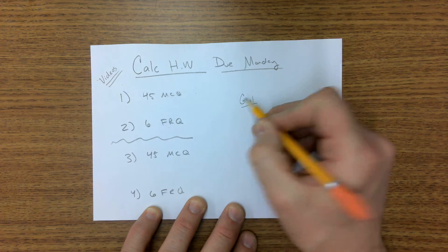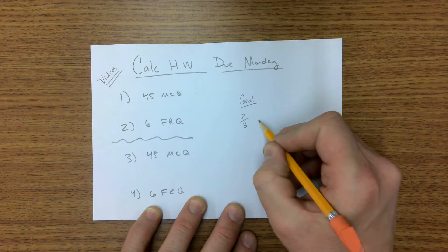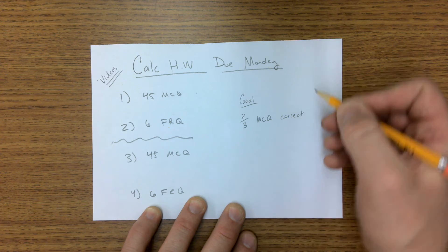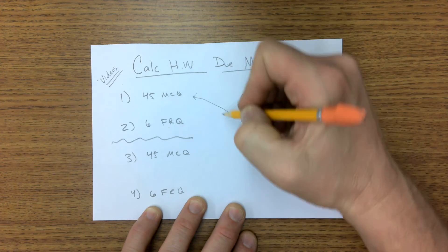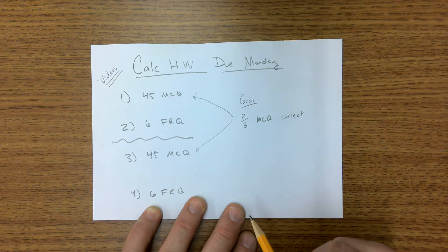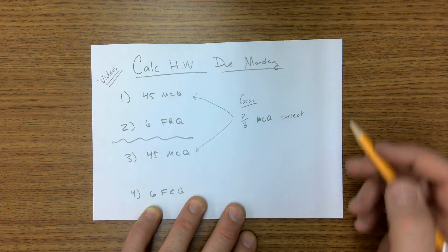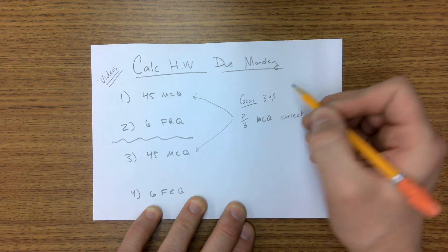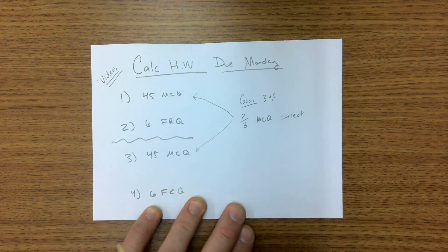So try them and then watch the videos to see if you were right. Your goal, I think at this point, our goal should be to get two thirds of the multiple choice questions correct. On your first attempt at these, you should be trying to get two thirds of them correct. It's a good goal.